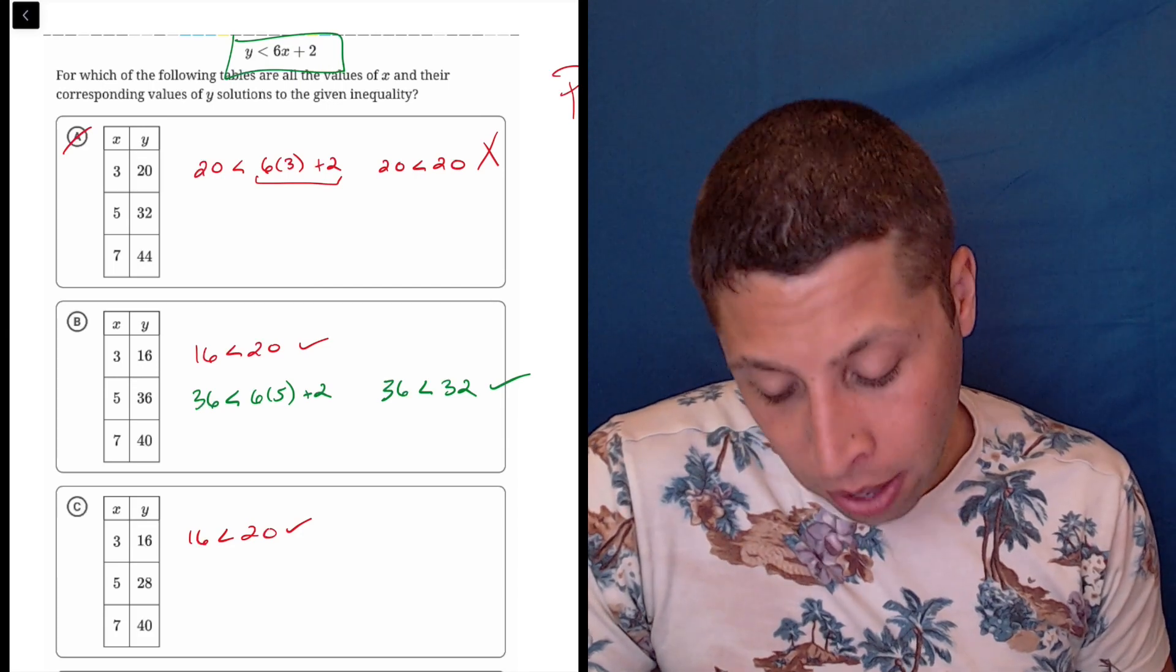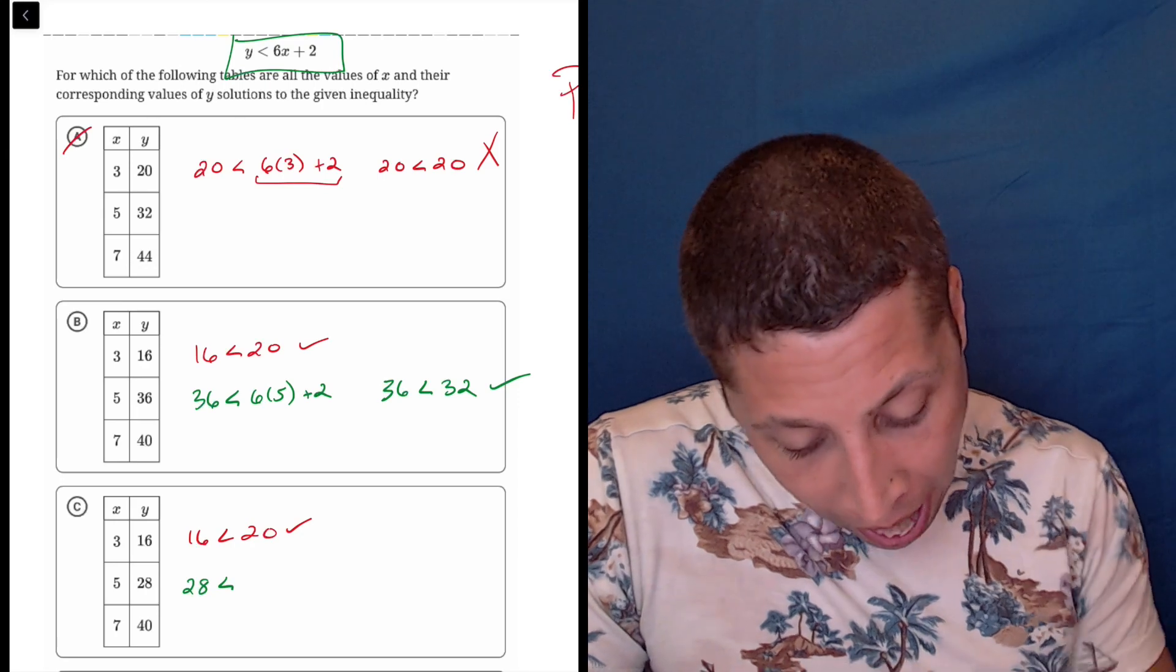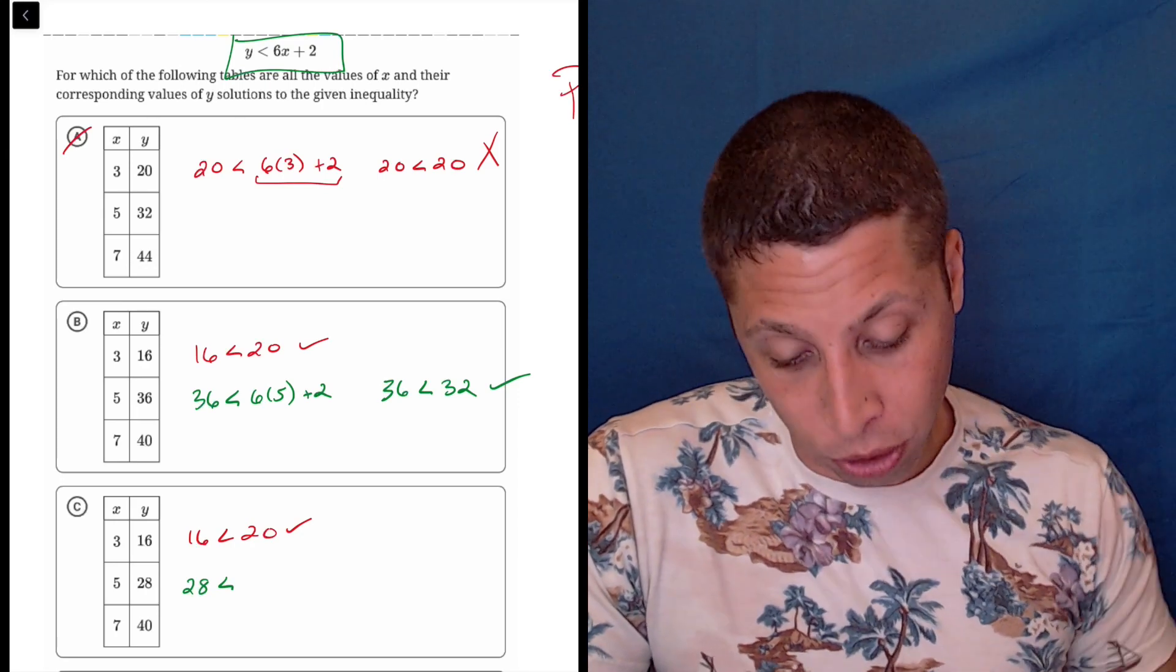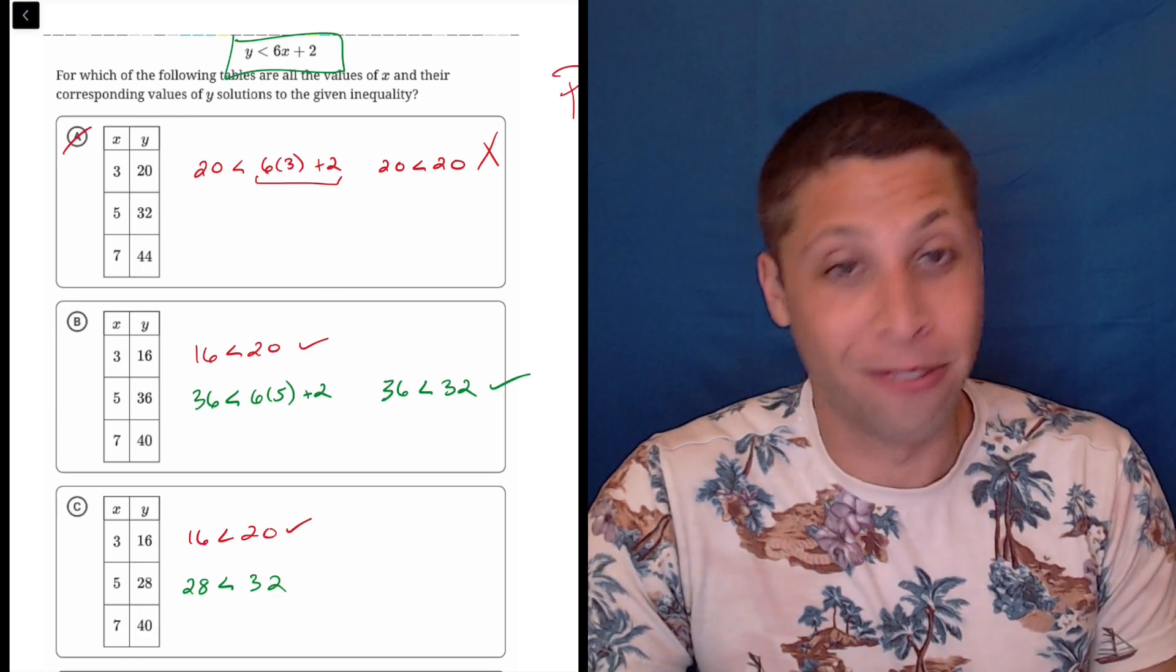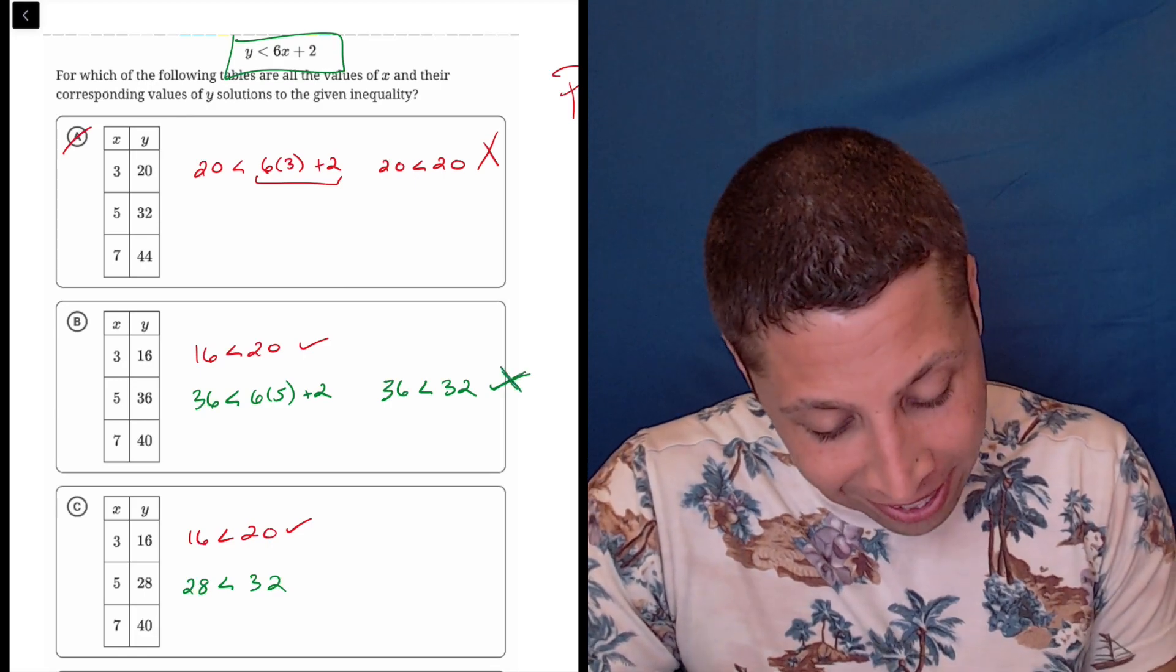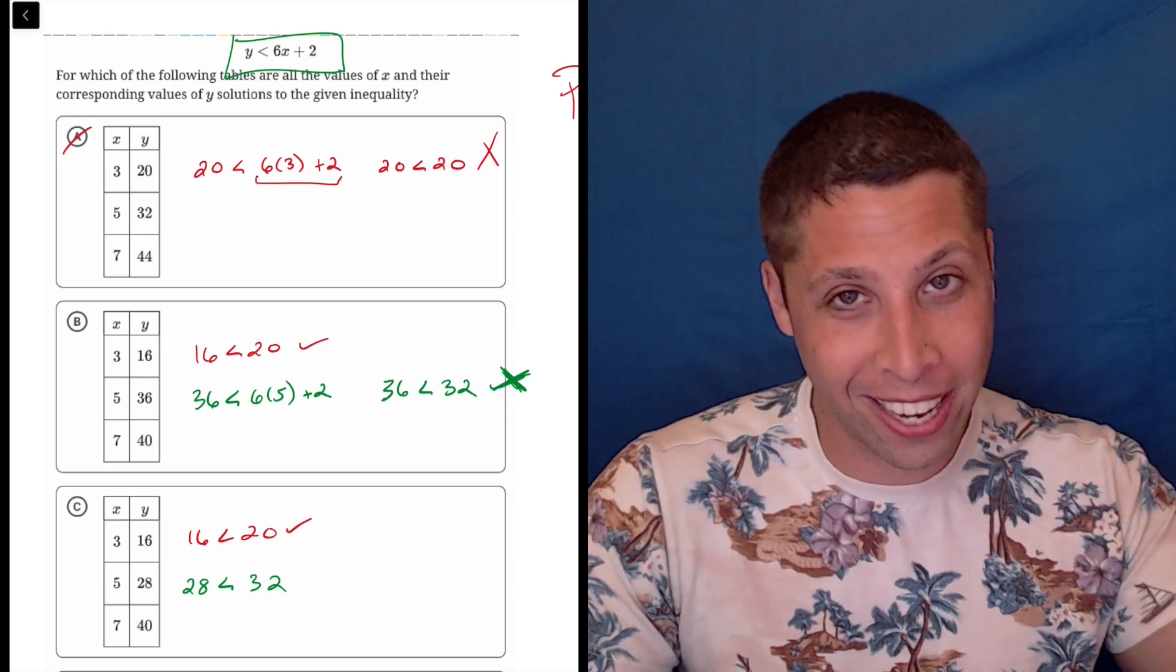So that means let's repeat the 5. The 28 is now the y, and 6 times 5 plus 2 is still 32. Oh wow, see this is why you show the work. As I just realized, no, of course this doesn't work - 36 is not less than 32. In my head I was flipping it.